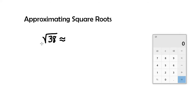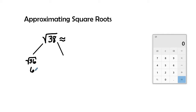In our first step we need to find what perfect squares are before and after our value. We know that 6 times 6 is 36, so the square root of 36 gives us the whole number 6. Then we look at 7 times 7, which gives us 49. So we know that the square root of 38 is going to be in between 6 and 7.